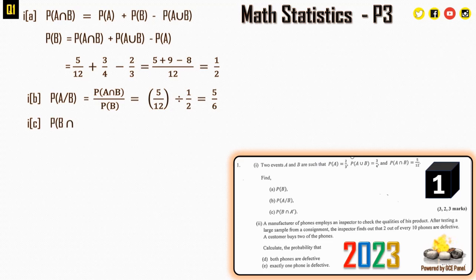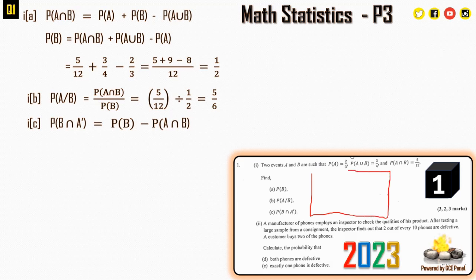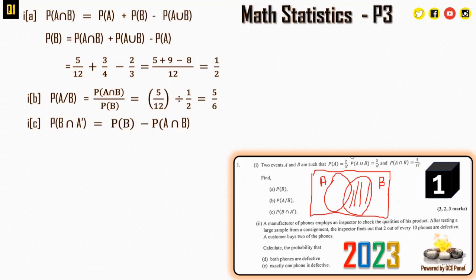For part (c), P(B ∩ A') can be found using a Venn diagram. A prime means outside A, so the region B ∩ A' is given by P(B) − P(A ∩ B) = 1/2 − 5/12 = 1/12.